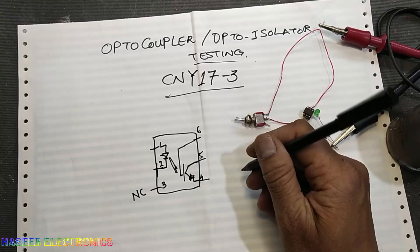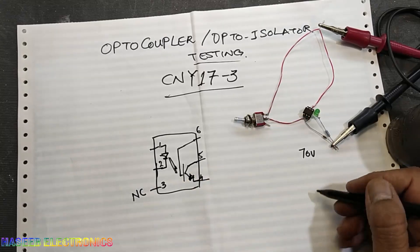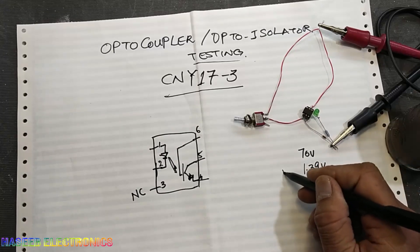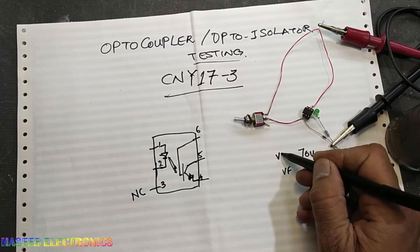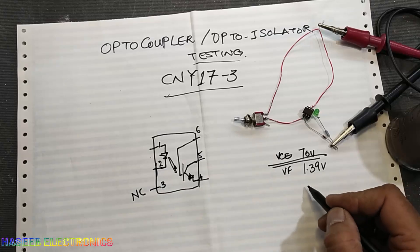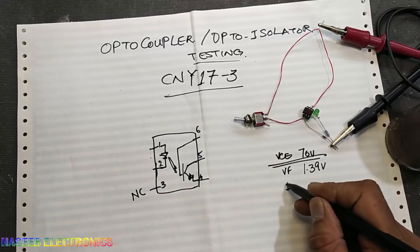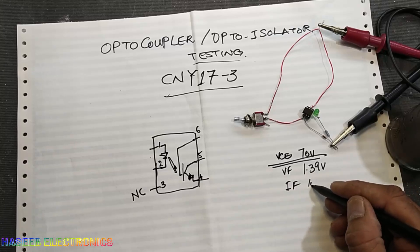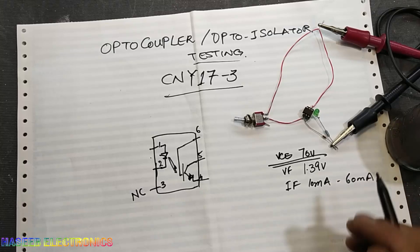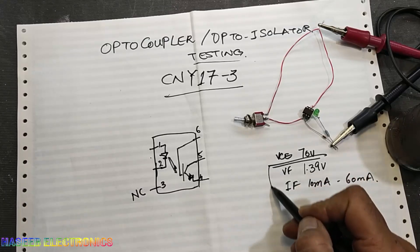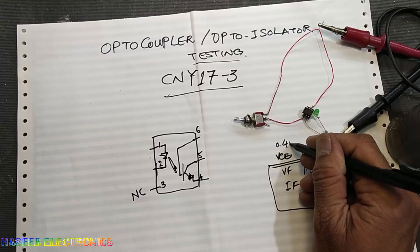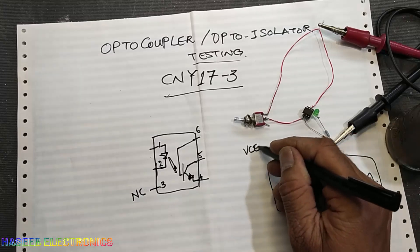From the datasheet: maximum collector-to-emitter voltage is 70V, forward voltage VF is 1.39V, and forward current IF can be 10mA to 60mA. It uses an IR diode, and in saturation the VCE saturation voltage drop is 0.4V.